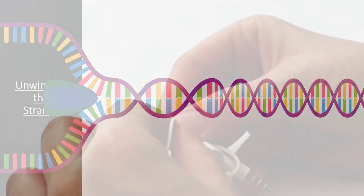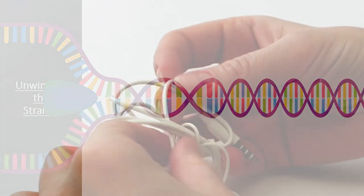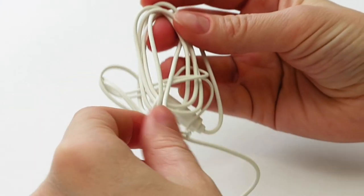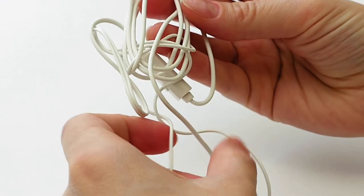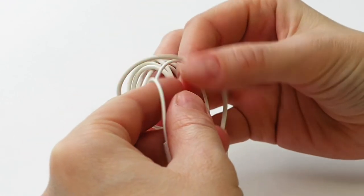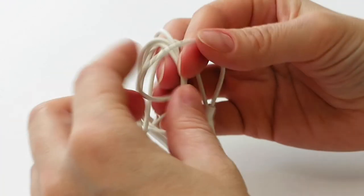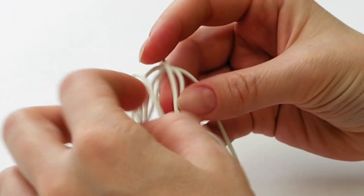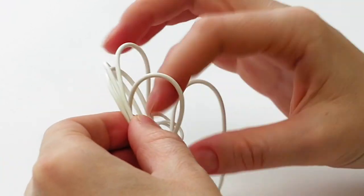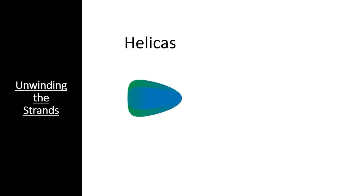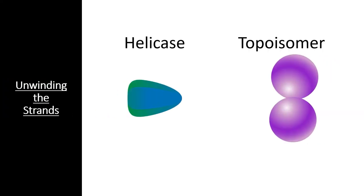Supercoiling is similar to what happens when you try to get the knots out of your headphones. If you simply grab the two headphones and pull on them, you end up creating tight knots that are even harder to untangle. To overcome these two hurdles, the process of DNA replication uses two very important enzymes: helicase and topoisomerase.